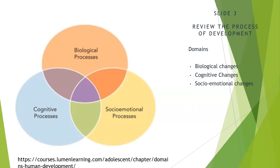On slide 3, you will see the three areas of lifespan development. Other theorists have created other domains as well, but in this course we're going to focus mainly on three. Lifespan development refers to the full process of human development from conception to death. It is a holistic approach to understand all the biological, cognitive, emotional, and social changes that people go through.